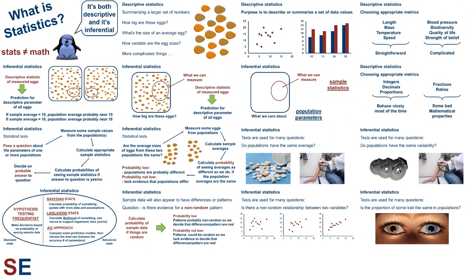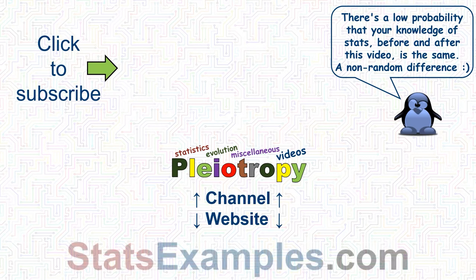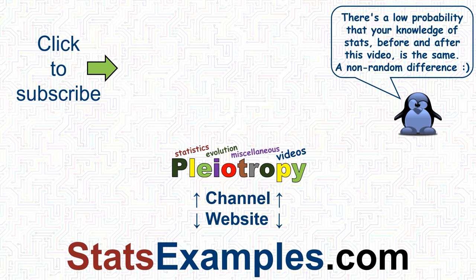Now when you hear someone talking about statistics, you have a sense of what they mean. And if anyone ever says that they have statistics that prove something, what they really mean is that they have data that would be super unlikely if their claim wasn't true. Weird things do sometimes happen, though, which is why real scientists usually repeat experiments to see if they get the same results multiple times. As with all the videos on this channel, there's a direct link to a PDF of this summary slide below. Feel free to like, subscribe, comment, share, and all the usual YouTube things. If you found this useful, please help someone else find it too. Also, check out the Stats Examples website where there are links to a bunch of videos like this, pages with more statistics education material, and even some cartoons. Also, everything on the site is free.